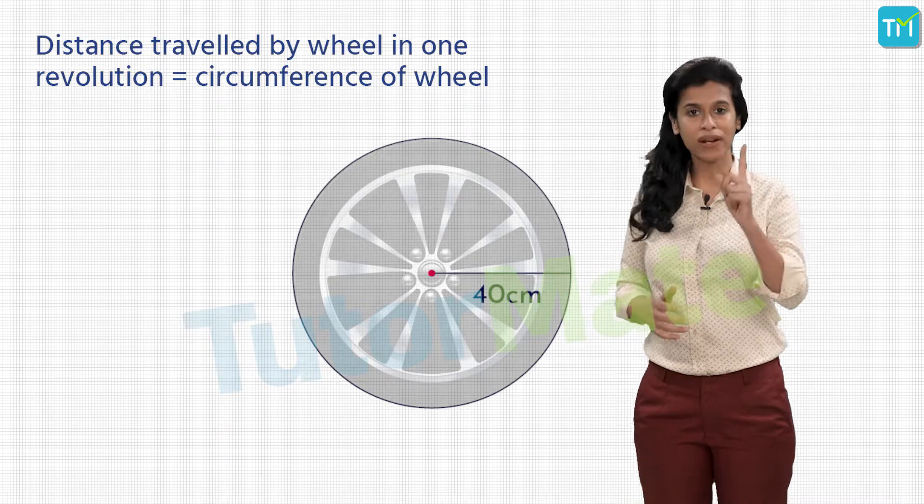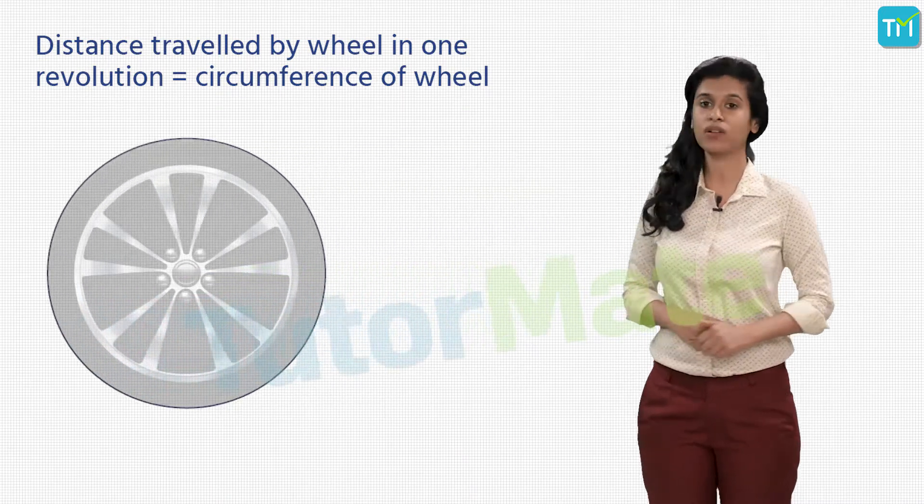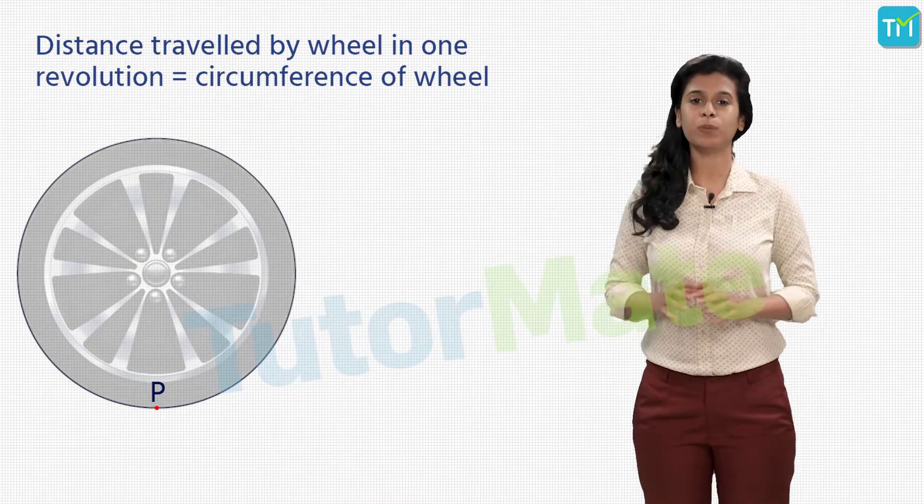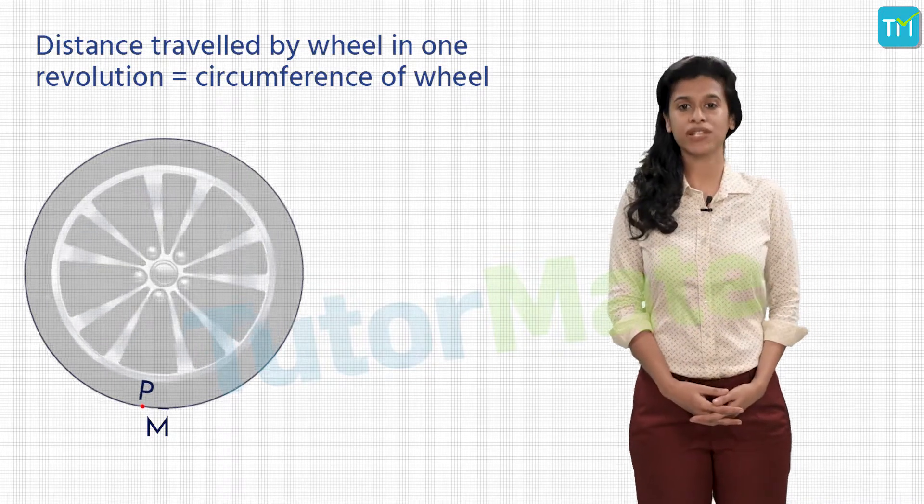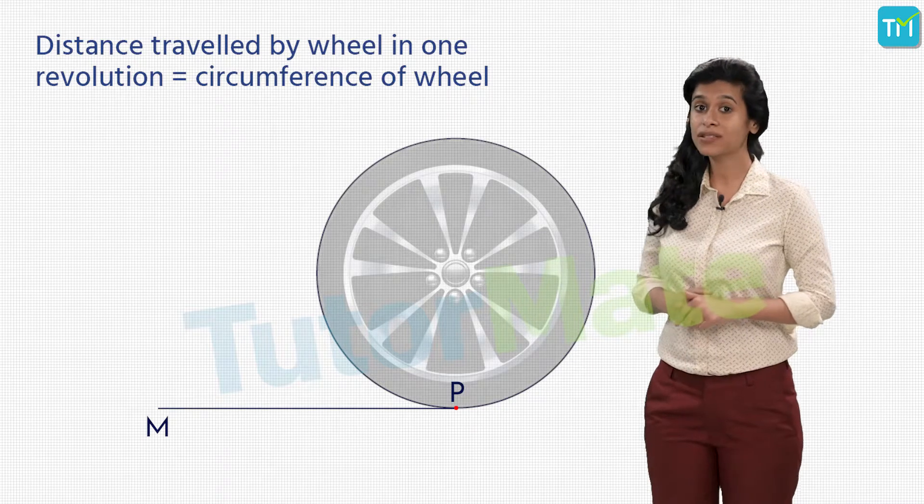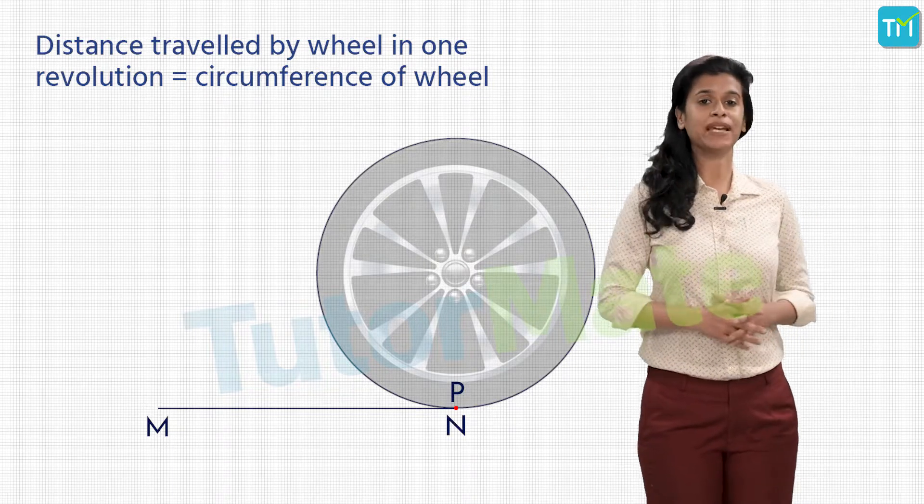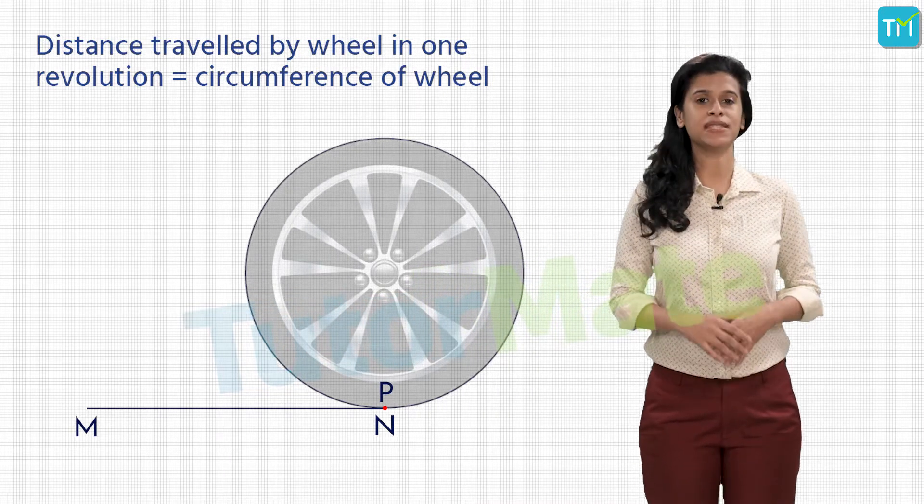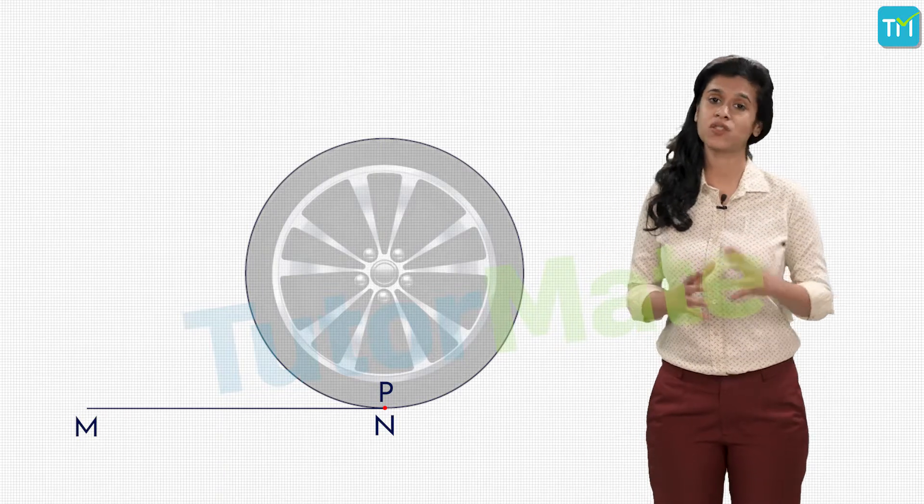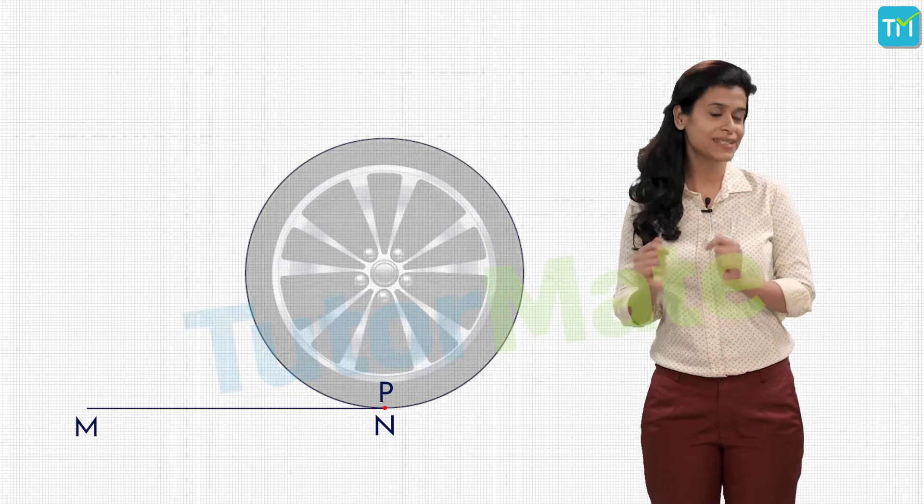The distance traveled by a wheel in one revolution is nothing but the circumference of the wheel. We can visualize it by considering one point P on the surface of the wheel. Let's say initially P was in contact with the ground at point M. Now let's say the wheel makes one rotation and moves ahead. Since the wheel has made exactly one rotation, the point P will be back in contact with the ground at point N. So the point P has traveled a distance MN on the ground, and since it traveled around the wheel in one rotation, it covered the circumference of the circle. Therefore, the length MN equals the circumference of the circle.